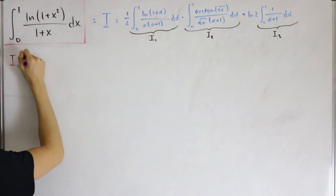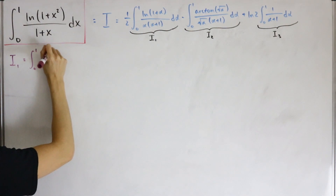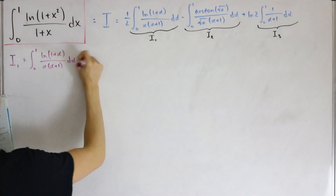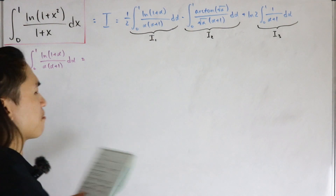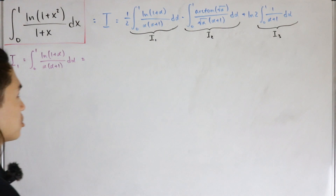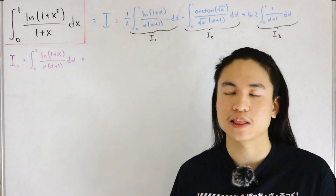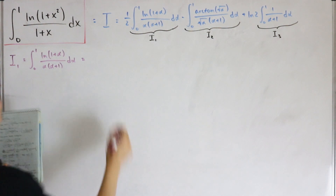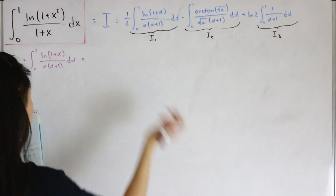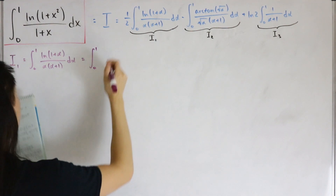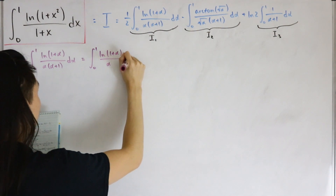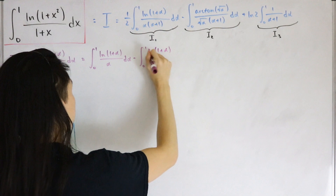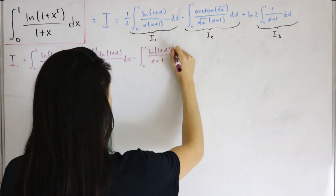I₁ is the integral from zero to one of ln(1+α)/(α(α+1)) dα. To simplify, we do something similar to partial fractions — even though the numerator is a log, not a polynomial — and rewrite the integrand. This gives us the integral of ln(1+α)/α dα minus the integral of ln(1+α)/(1+α) dα.